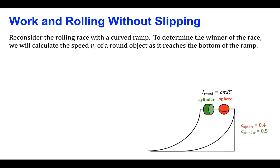We were able to do that because the normal force and the acceleration on each round object were constant. As you learned in topic 5.1, when an object moves down a curved ramp, the normal force and the acceleration change with the curvature of the ramp. So in this problem, we want to reconsider the rolling race and determine which object gets to the bottom first by calculating the speed at the bottom using the principles of work and changes in energy.